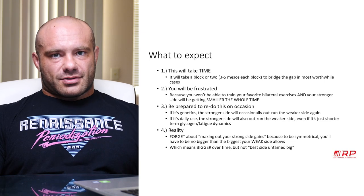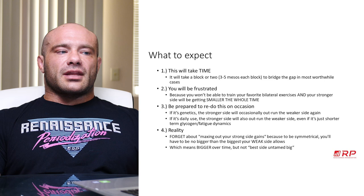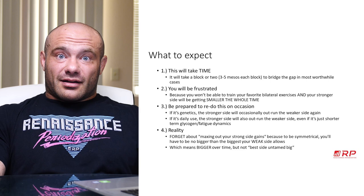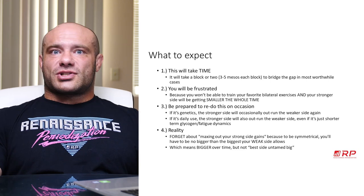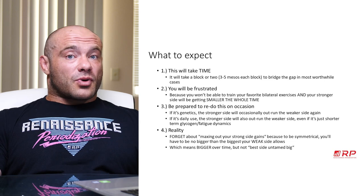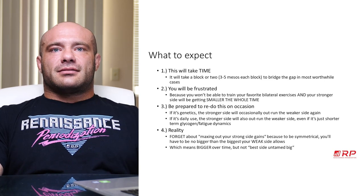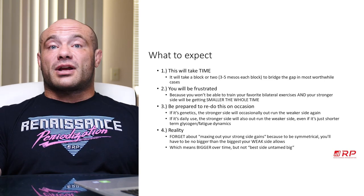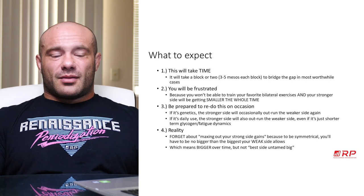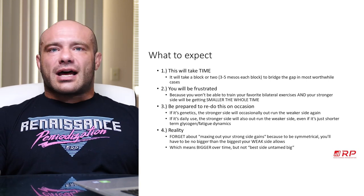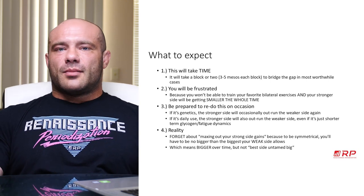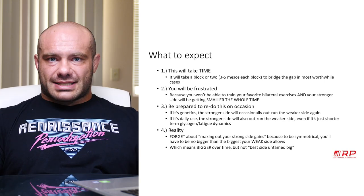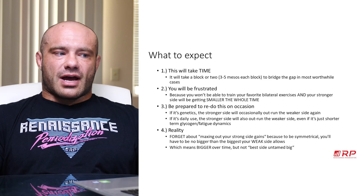Here's more not-so-great news: you have to be prepared to redo this on occasion. If it's genetics causing the difference, the stronger side will occasionally outrun the weaker side because it's just inherently better at growing muscle. If it's a daily use cause, it will also keep happening. Even short-term glycogen and fatigue dynamics can make things look asymmetrical until you take a real break from daily activity and eat a bunch of carbs. You have to be prepared to redo this periodically — it is not a one-time fix. It can look very similar for months or years, but every few years you'll likely need to re-norm.